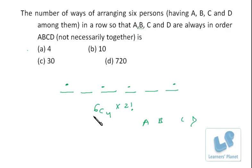So simply this is 6C4 into 2 factorial. Let's calculate that: 6C4 is 6C2, so 6C2 is 6 times 5 by 2, which is 30 ways.